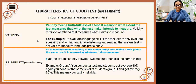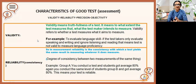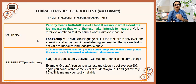I'll start with reliability first. Reliability means consistency — that's the dictionary meaning. In assessment, when you measure students' performance of the same age or same level, if you conduct a test for section A and get 80% or 50%, then conduct the same test for section B of the same level and get the same result — 50% or 80% — that is what we call reliability.